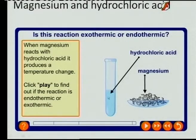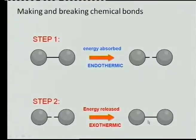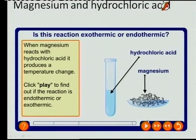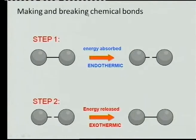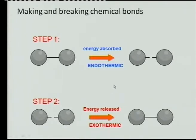Is this reaction exothermic or endothermic? I am going to add magnesium ribbon to hydrochloric acid. During a chemical reaction there are two steps. Step one: you break the bonds — energy is taken in — and that step is called endothermic. Step two: you take the activated complex with all the loose, unstable atoms and molecules and you make new bonds — energy is released — and that step is called the exothermic step. Whichever is greater, we call that the overall process.